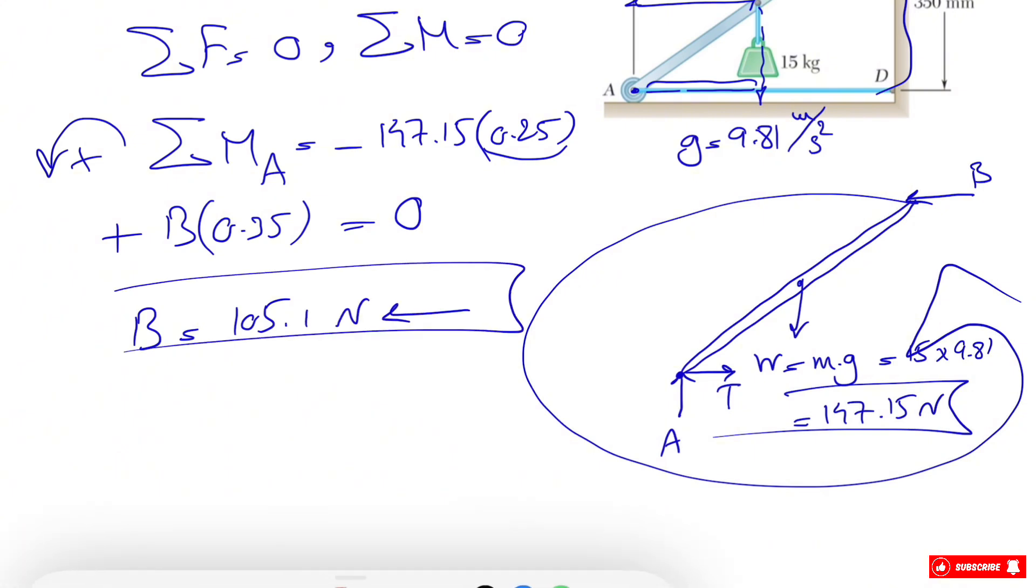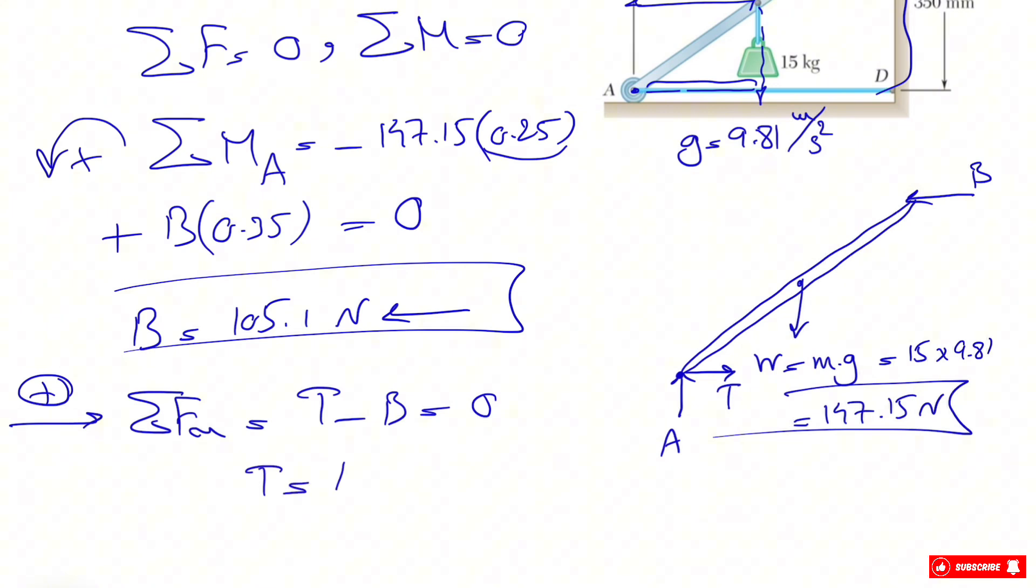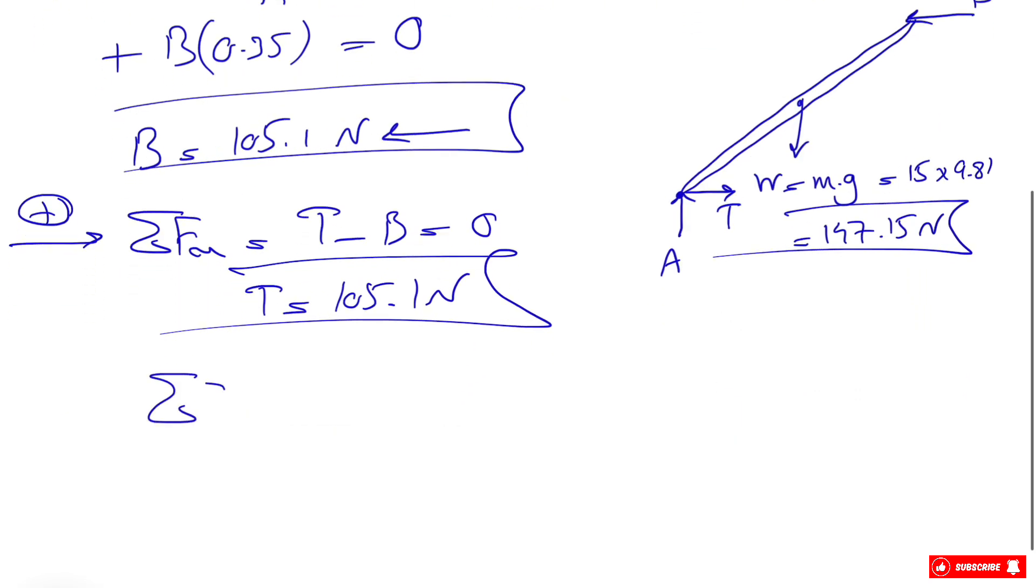Now let's move on to our Fx and Fy. What we have for Fx: let's consider this our positive direction. We have T minus B, and that's pretty much everything. If you do that, we'll get T equal to what we found for B: 105.1.